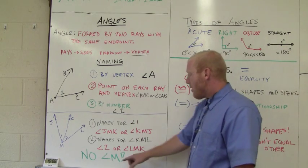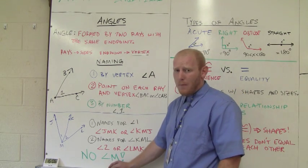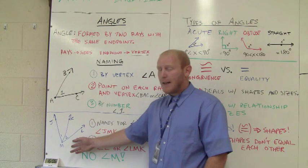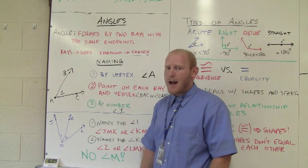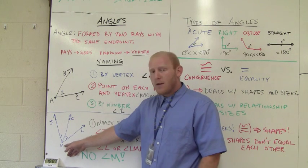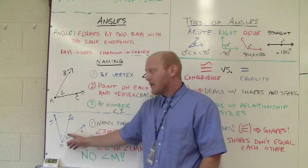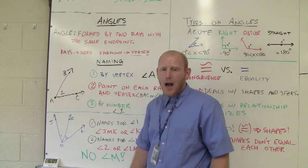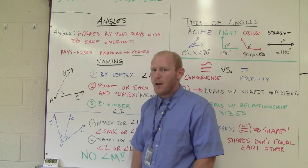Finally, right here in bold I said no angle M. For this picture, like I said before, I warned you, you cannot name it by its vertex only. Because as you see here, this vertex has two angles within it. So I can't just say angle M. You're not being specific enough. You've got to tell me which one you're talking about.